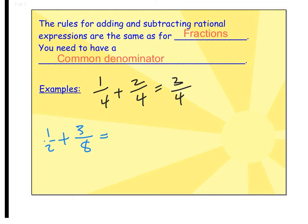So one example in black: 1 fourth plus 2 fourths equals 3 fourths. The common denominator is 4, so when the denominator is the same, we're just adding the top numbers together — that's how we got the 3 on top.